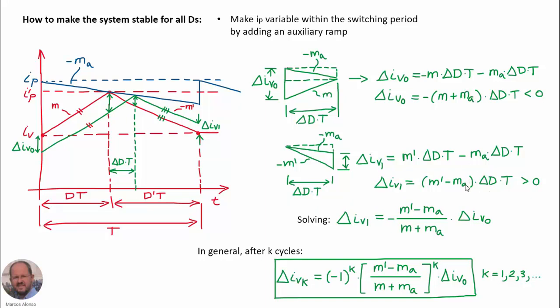Working with these two expressions, we can obtain the relationship between the final perturbation and the initial perturbation, which includes MA as a degree of freedom. After k cycles, we can generalize this expression and obtain the value for the perturbation after k cycles. We can see that the signs of the perturbations are going to alternate — if the first is negative, the next period it is positive, then negative again, and so on.